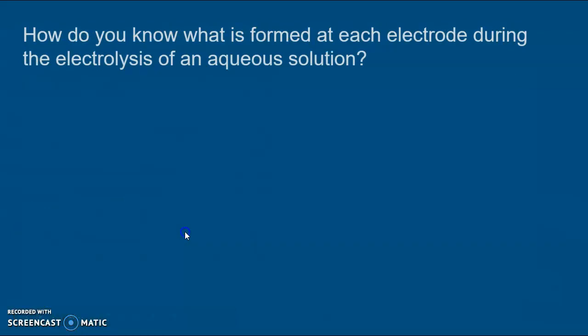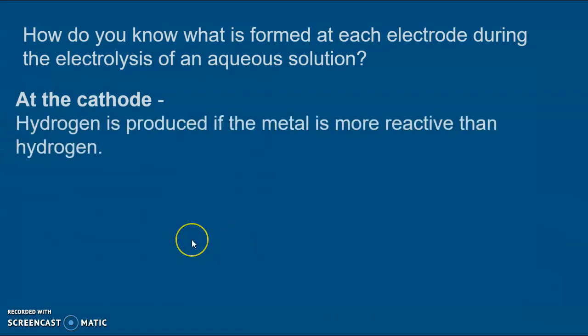So how do we know? Well there are some simple rules to learn linked to the reactivity series. Hydrogen is produced at the cathode if the metal in the compound is more reactive than hydrogen. So if something is above hydrogen in the reactivity series then hydrogen is formed at the cathode. Link that back to the diagram we saw at the start that had hydrogen formed at the cathode because sodium is more reactive than hydrogen.